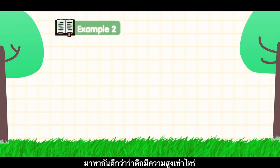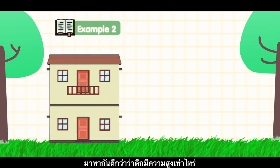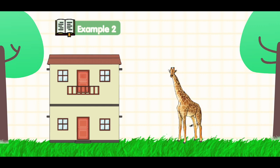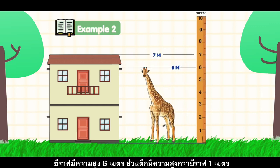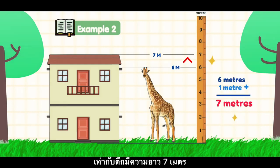Now let's look at some more word problems about distance. What is the height of this building? The giraffe is 6 meters tall, but the building is 1 meter taller than the giraffe. That means the building is 6 meters plus 1 meter, or 7 meters tall in total.